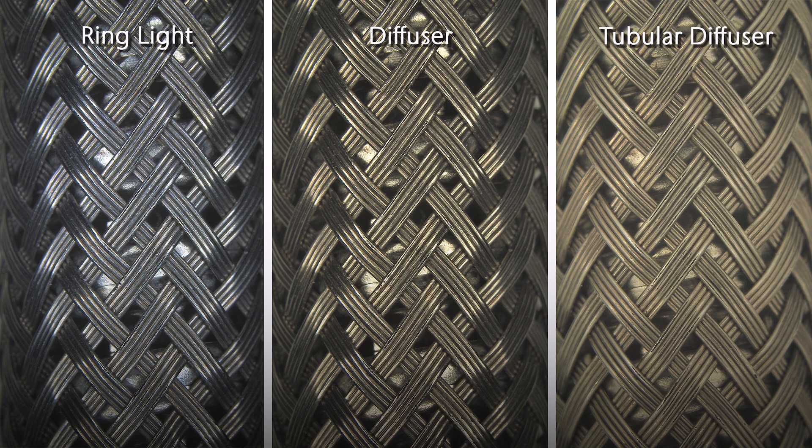In the picture on the left, you can see the sample when illuminated only with a ring light. In the second picture, a conventional diffuser was mounted in front of the ring light. Finally, the third picture shows the result using our tubular diffuser.